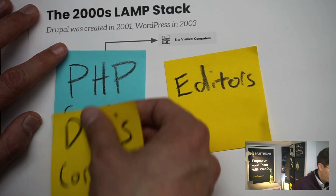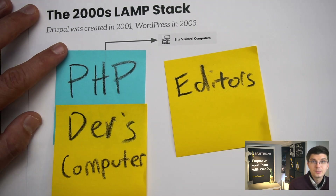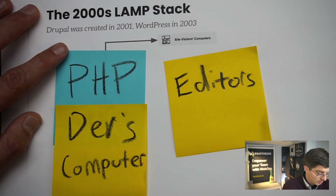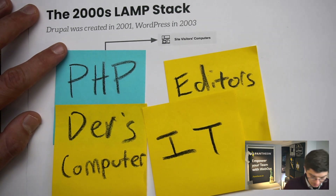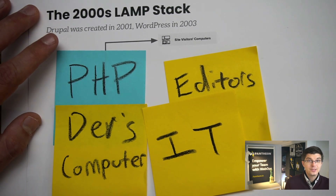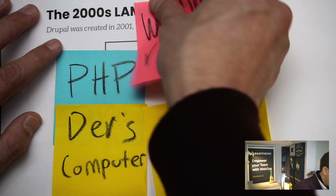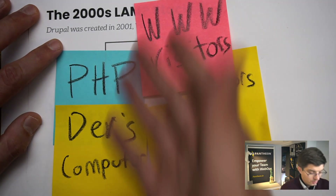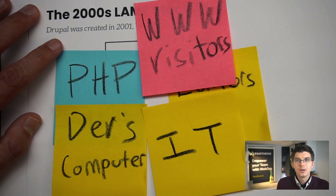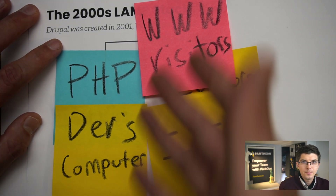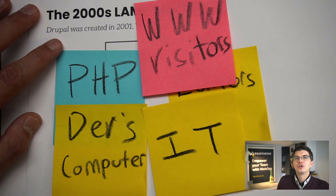Code changes move up from developers' computers to the PHP server. That PHP server is controlled by an IT department, and this is a good enough way to assemble a good enough website for those visitors out on the world wide web. When the general public views the website, they get a good website.